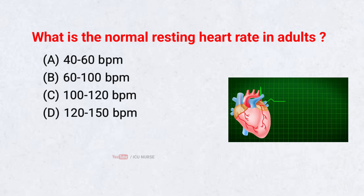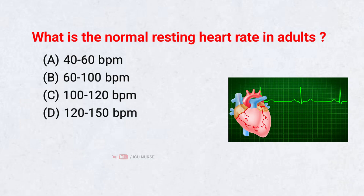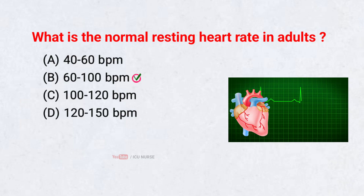What is the normal resting heart rate in adults? Correct answer B: 60–100 beats per minute.